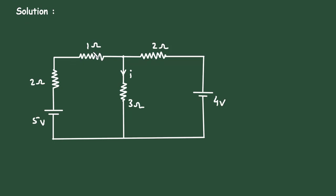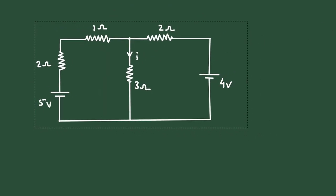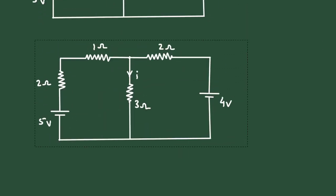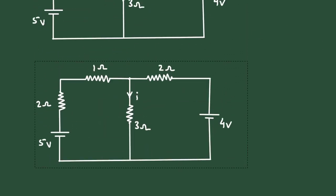As we can see, this 1 Ohm and 2 Ohm are connected in series, so it will be a single resistor of 3 Ohm. Let's make it a single resistor of 3 Ohm.